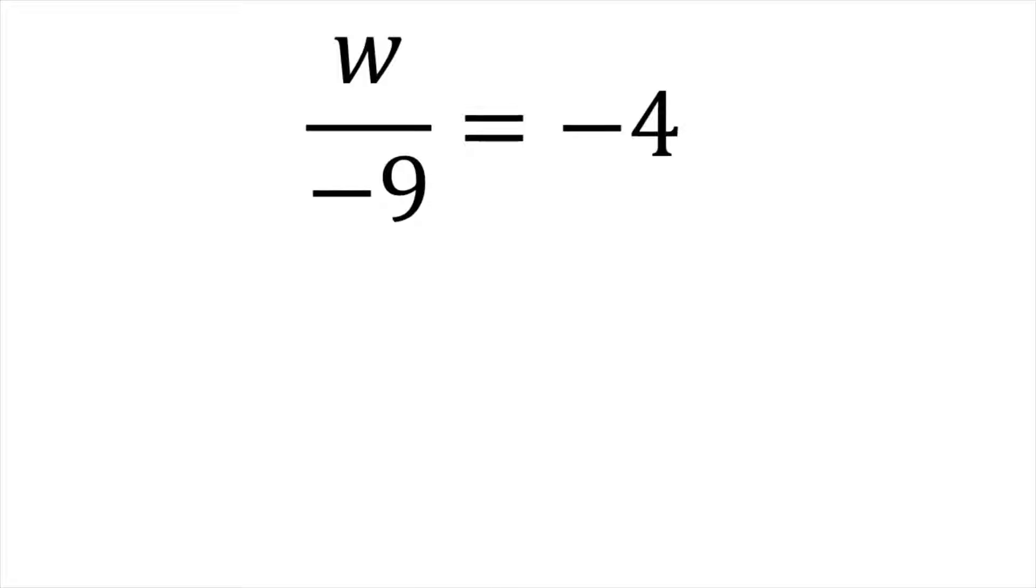But how do I make that negative nine, because right now it's kind of part of the coefficient of w. Now that we're worried about that, how do I make that negative nine a one? Because I really just want w, I don't want w divided by negative nine.